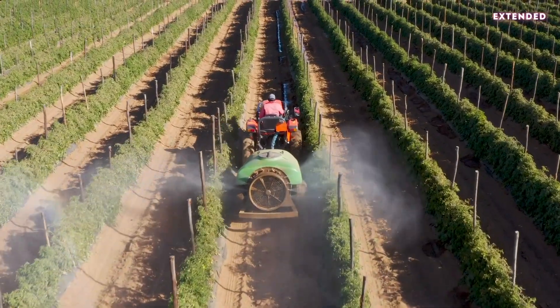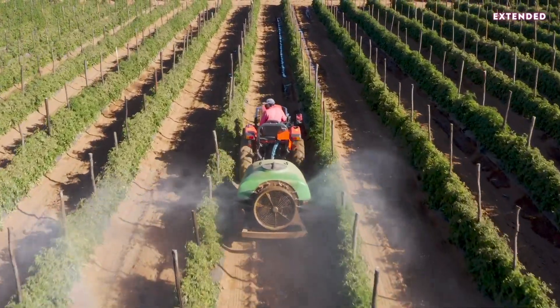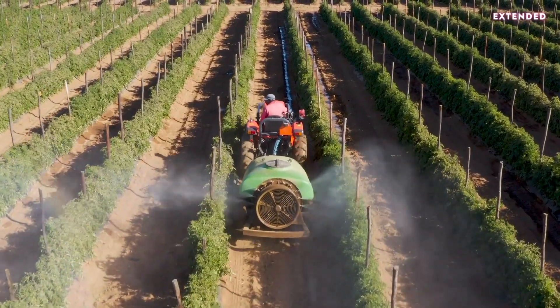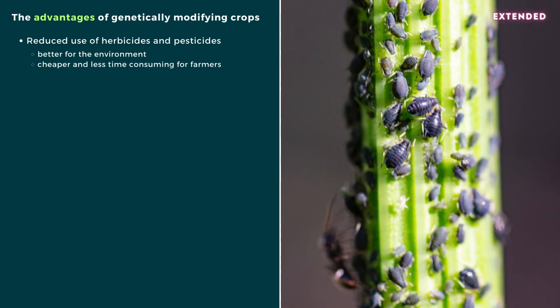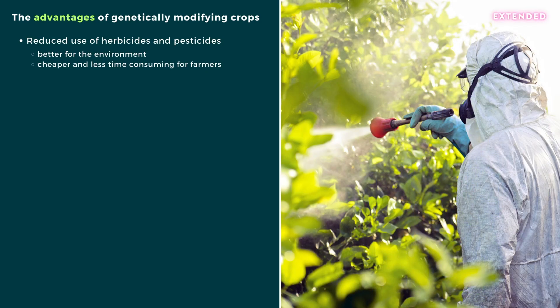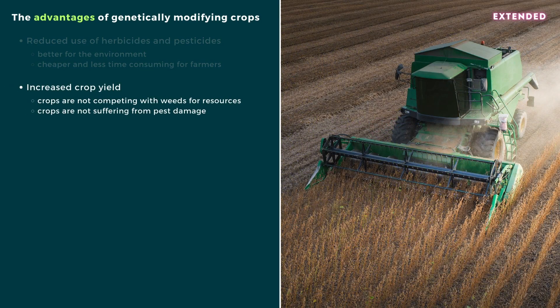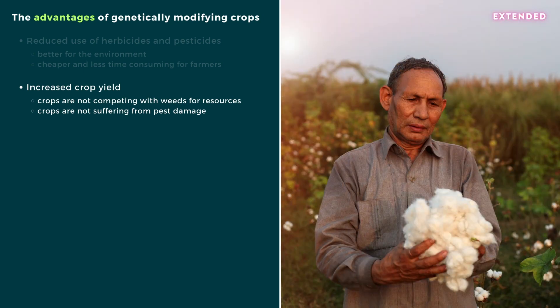Finally, you need to discuss the advantages and disadvantages of genetically modifying crop plants like soy, maize and rice. Advantages include reduced use of herbicides and pesticides — by inserting genes that make crops resistant to insect pests, farmers no longer need to spray toxic chemicals, which is better for the environment and both cheaper and less time consuming. Increased crop yield: modified crops with resistance to herbicides no longer compete with weeds for resources, increasing production rates, and pest-resistant crops reduce losses due to pest damage.